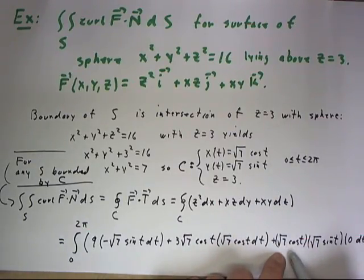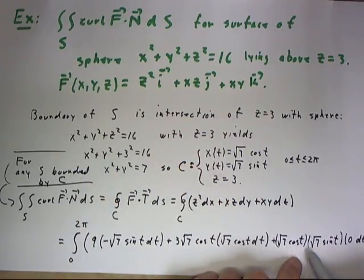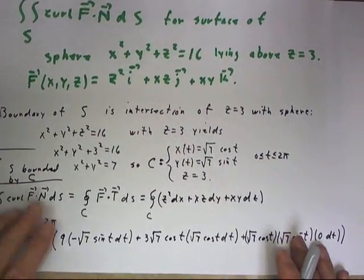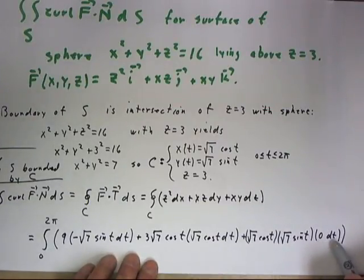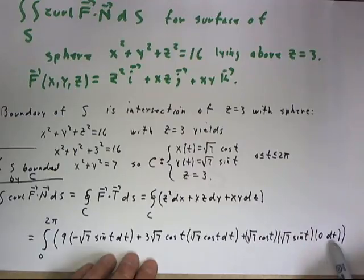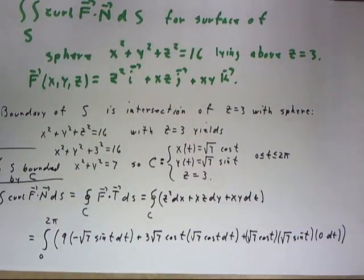We have square root of 7 cosine t times square root of 7 sine t, but then that's multiplied by just 0 dt because our dz is just 0 dt. So this part of the integral is 0.